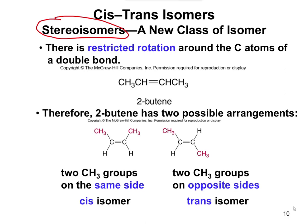Looking at 2-butene here — CH3CH double bonded to CHCH3 — it has two different possible arrangements. On the left, this is called the cis isomer. The cis isomer refers to this structure that has both CH3 groups on the exact same side of the carbons. In other words, one CH3 group points up and the other CH3 group points up around the double bond. Whereas on the one on the right, you have the two groups on opposite sides of each other — one CH3 pointing up and the other CH3 pointing down.